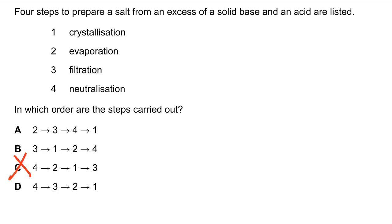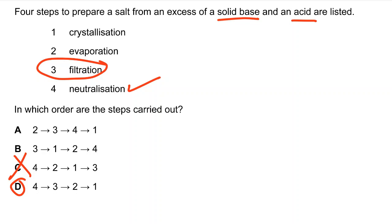The correct answer is D. First, neutralization — because you start with base and acid. Most candidates skipped the filtration step. The aim of filtration is to remove the excess solid base. The next step is evaporation to reduce the amount of solution, and then crystallization. So option D is the correct answer.